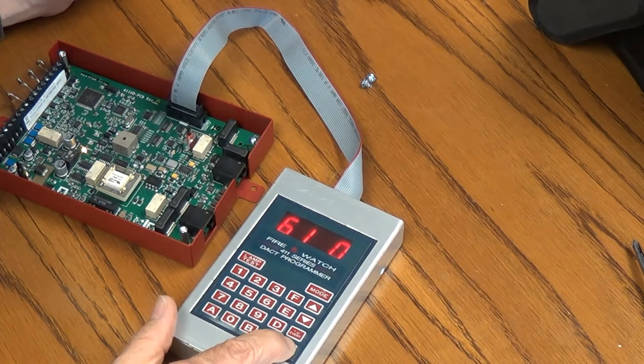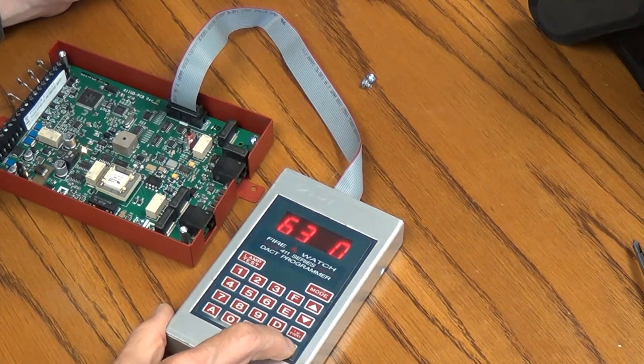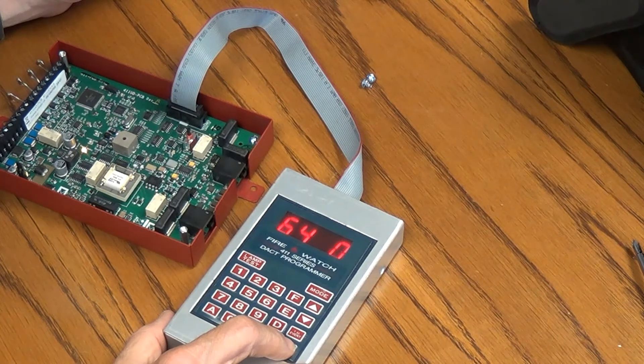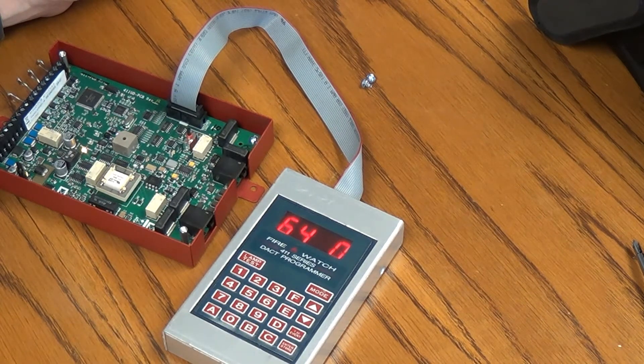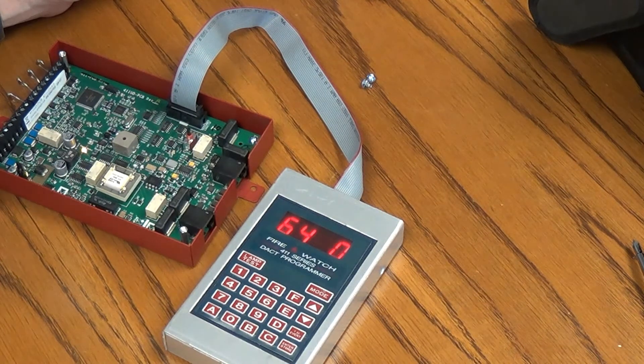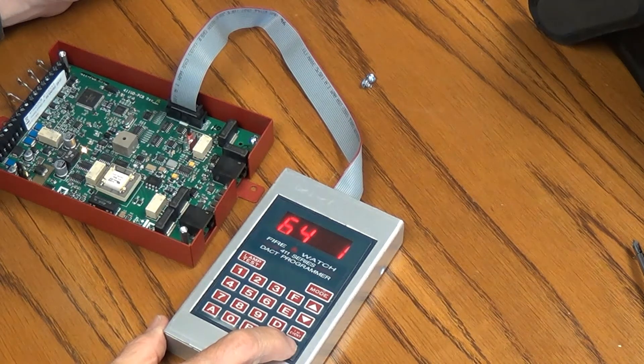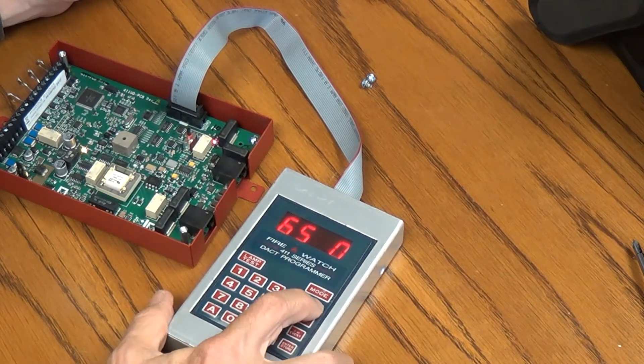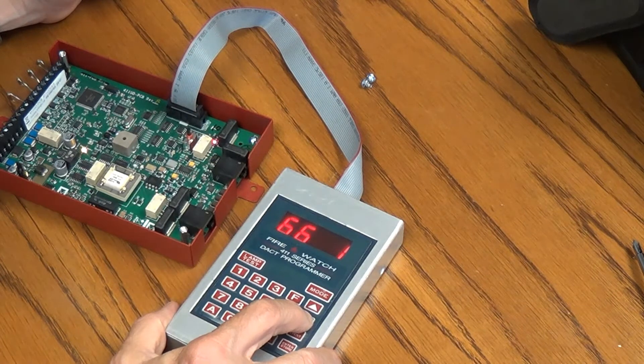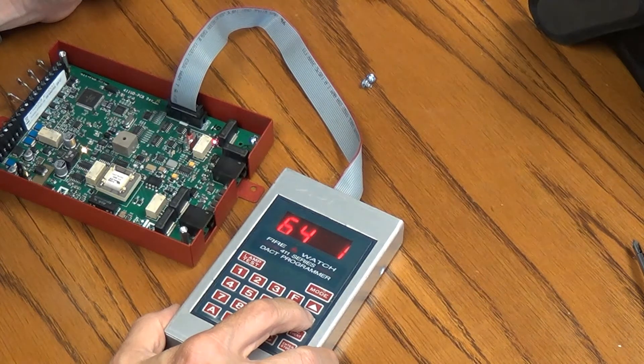We're going to enter until we get to 64. 62 is a 1, that doesn't matter. 63 is 0, that doesn't matter. 64 is communicator enable or disable. Well, we do not want this communicator to be disabled, so we're going to have to put a 1 here. Why it's not default as a 1, I don't know. But 64, important, very important. Let's put a 1 in there. I just heard the relay click on this board, so it knows now that it should be communicating. Again, 64 is 1.